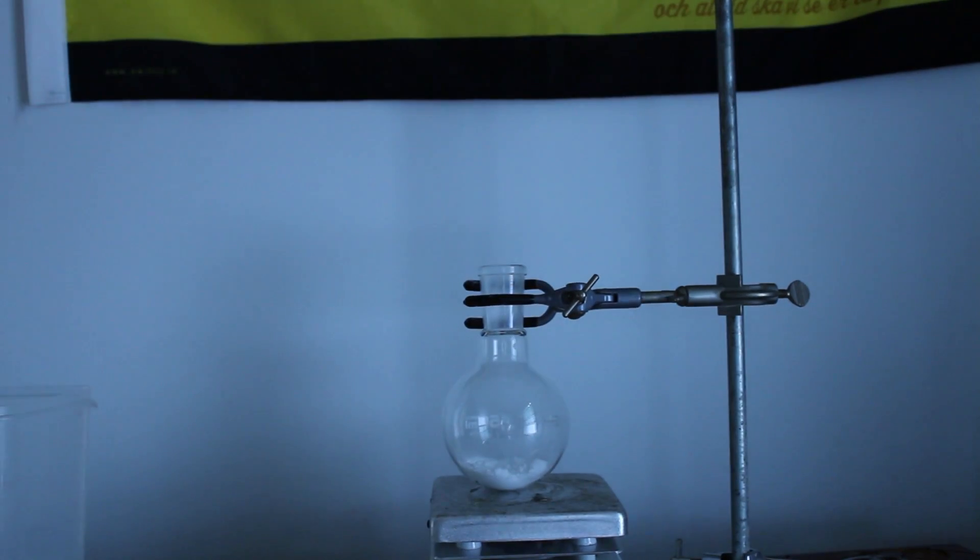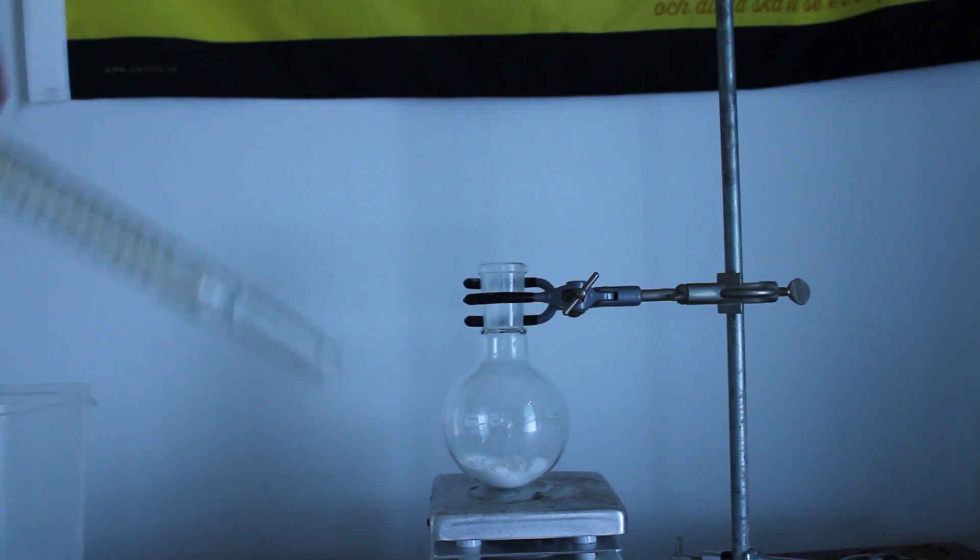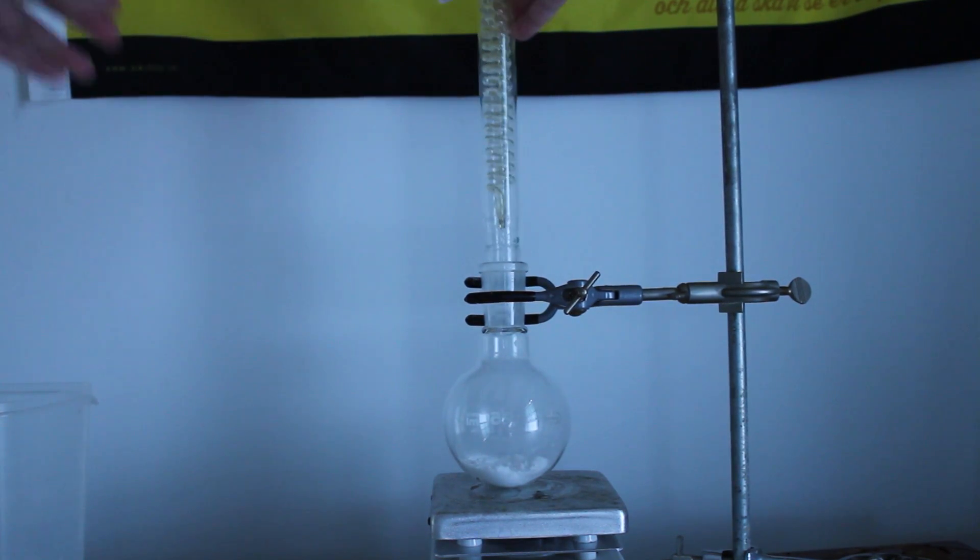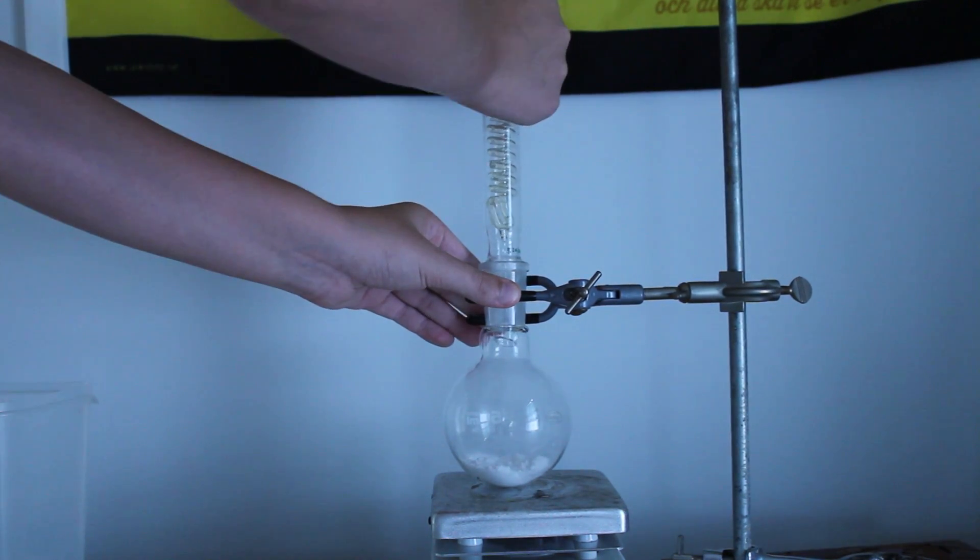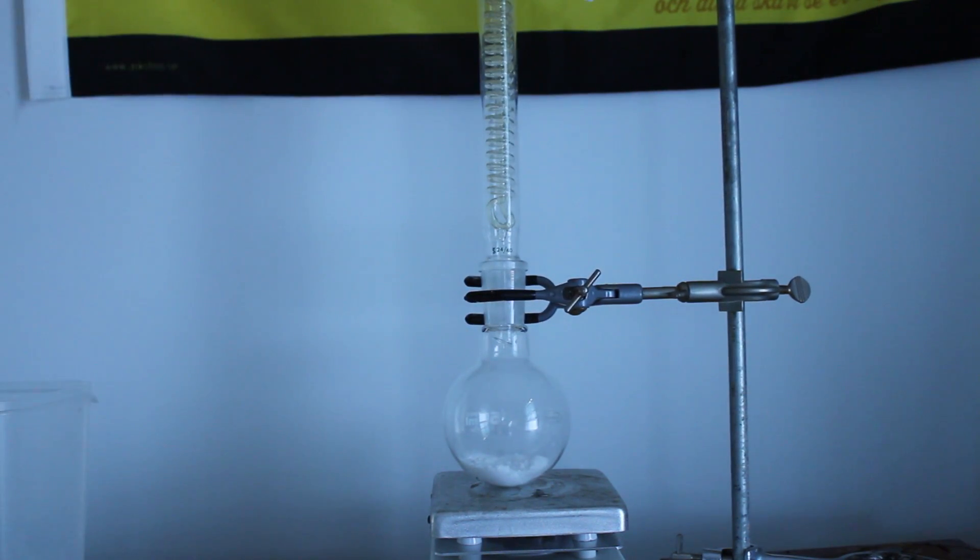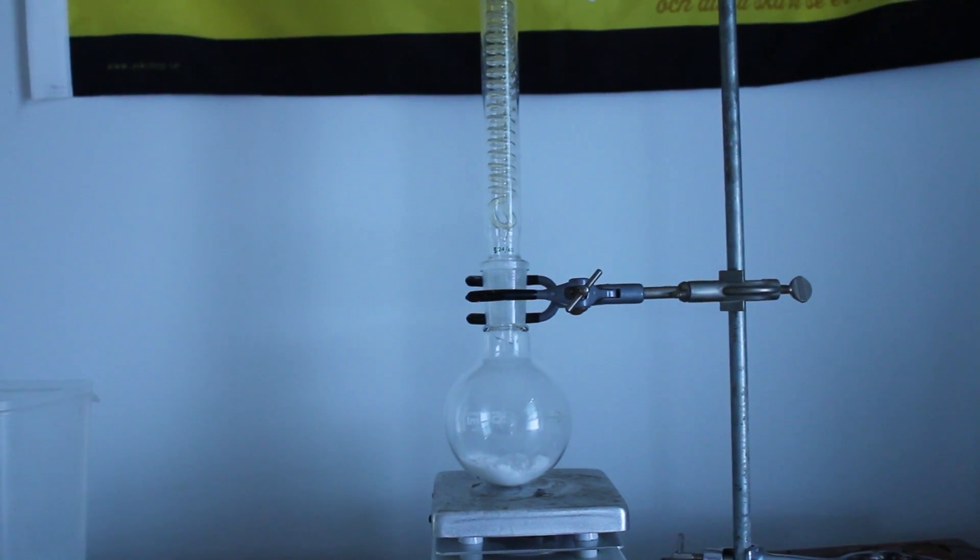Welcome to the Kemi-Kid. In this video, we will synthesize phenol from salicylic acid. Start by adding 13.812 grams or 100 millimoles of salicylic acid to a round-bottom flask.